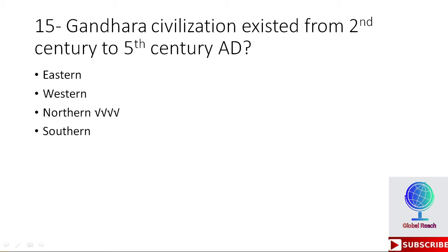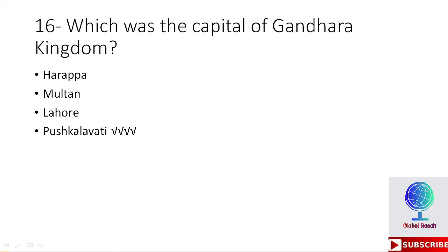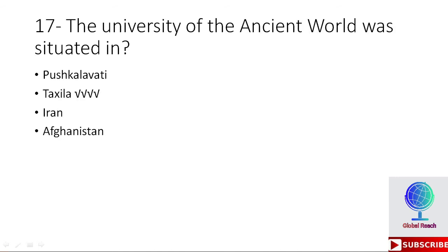MCQ 15: Gandara civilization existed from 2nd century BC to 5th century AD in which part of the world — eastern, western, northern, or southern? The right option is northern. Gandara civilization existed from 2nd century BC to 5th century AD in the northern part. MCQ 16: The capital of Gandara kingdom was — Harappa, Multan, Lahore, or Pushklawati? The right option is Pushklawati. MCQ 17: The university of the ancient world was situated in Taxila.